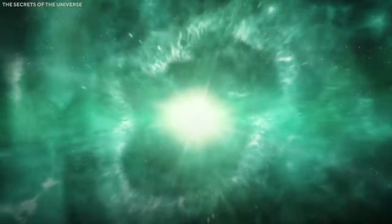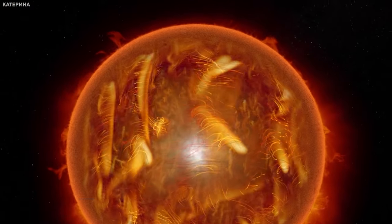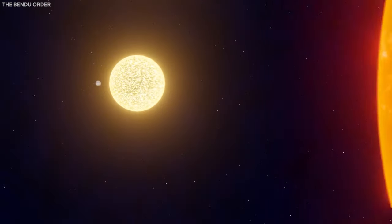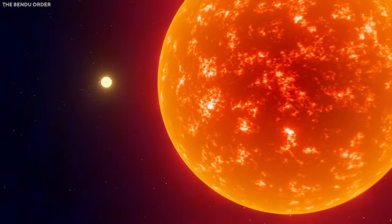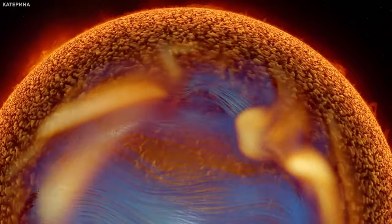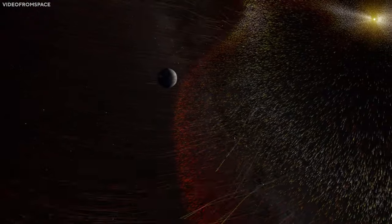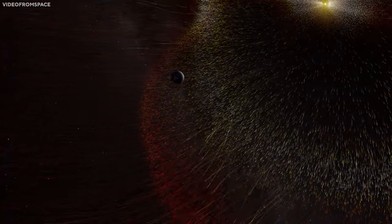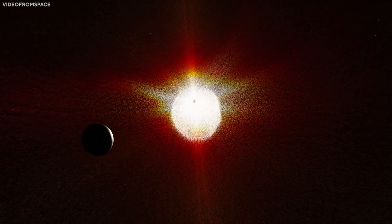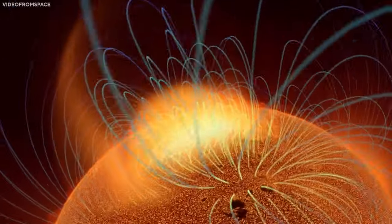The colossal proportions achieved by a single star prompt the question of how such a feat is possible. Despite its age of only 10 million years, significantly younger than our 5 billion-year-old Sun, Betelgeuse's massive size results from its rapid material consumption. Consequently, its lifespan is predicted to be shorter compared to other stars. However, even more alarming is that this astronomical giant, which spans a volume capable of containing over a billion of our Suns, approaches the end of its life cycle.